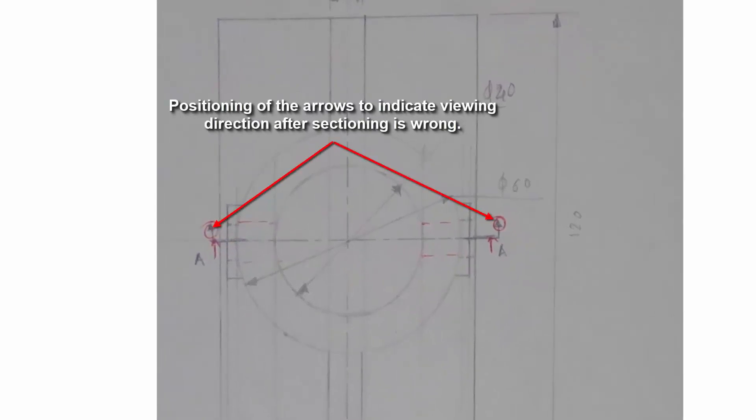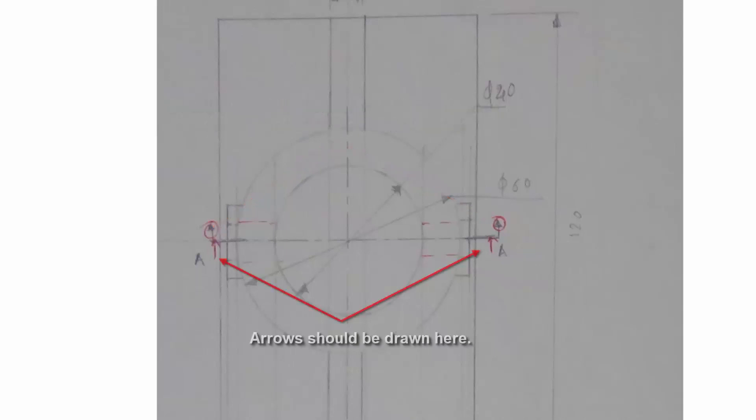Positioning of the arrows to indicate viewing direction after sectioning is wrong. Arrows should be drawn as shown here.